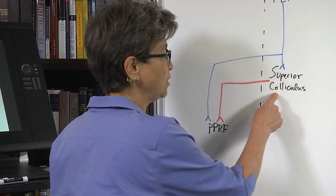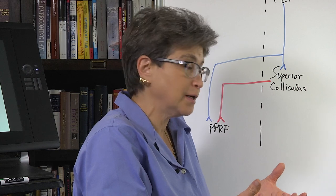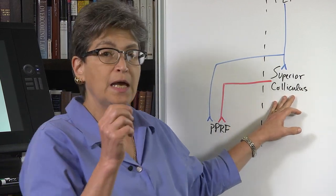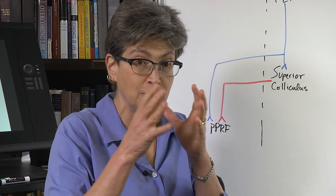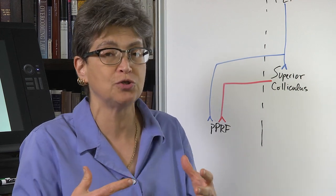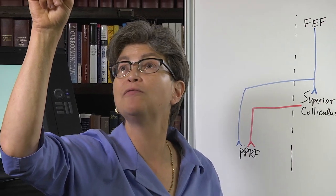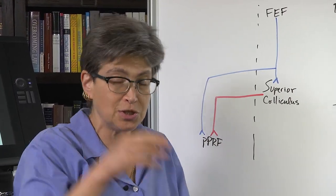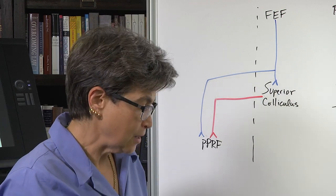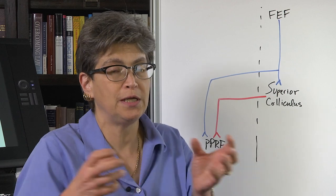The superior colliculus takes in sensory information and then makes a motor plan. It is a place where there is what's called a sensory-motor transformation — you take in sensory information and figure out how you're going to move to orient towards it. You can make that orienting movement no matter what your starting position is. So if the stimulus is up here and I'm looking here, I look up; if I'm looking elsewhere, I have to look even farther. It takes the starting position and end position and figures out how to get from start to end — that's a sensory-motor transformation, converting sensory coordinates into motor coordinates.